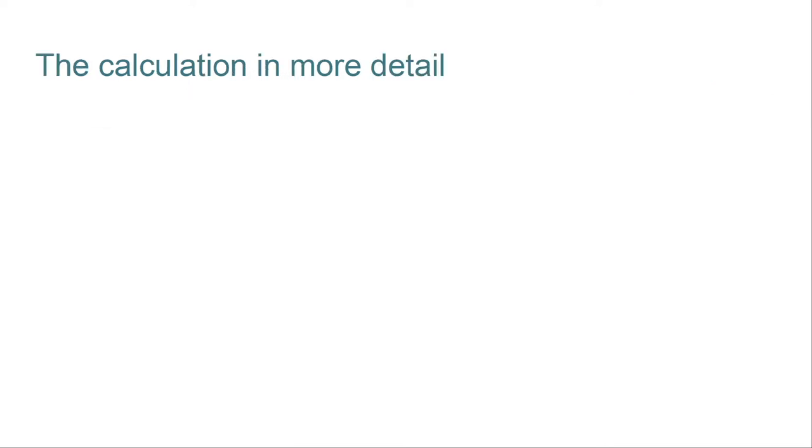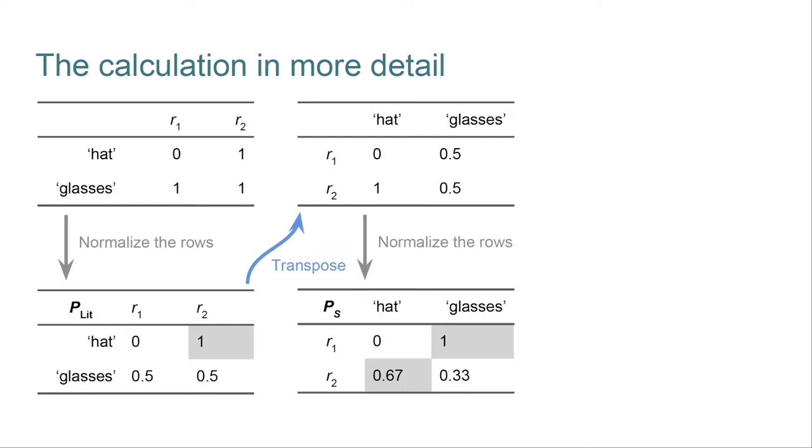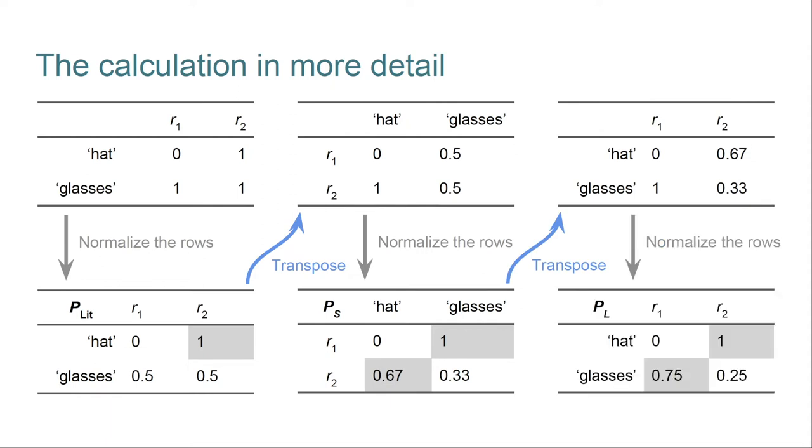Let's walk through the full calculation one more time to help convey the rhythm of the calculations. So we start with the semantics. We normalize to get the literal listener. Then we transpose to start the speaker calculation. We normalize again to get the pragmatic speaker. Then we transpose to begin the pragmatic listener calculation. And then finally we normalize. And what we get reflects our desired implicature, which is a strong bias for R1 given glasses.